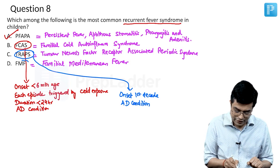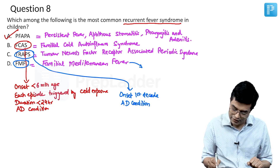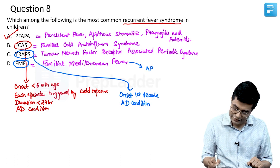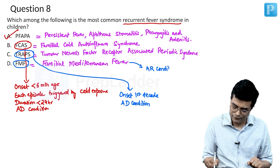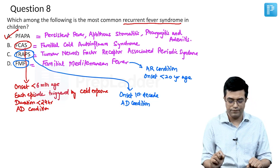Familial Mediterranean Fever is different from both of these entities because it is an autosomal recessive condition. The onset occurs before 20 years of age, according to both Nelson and Harrison.